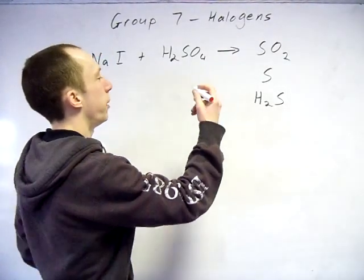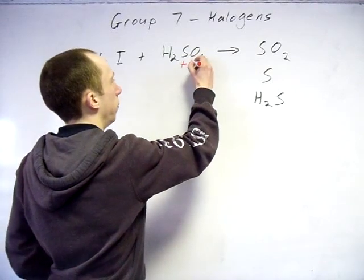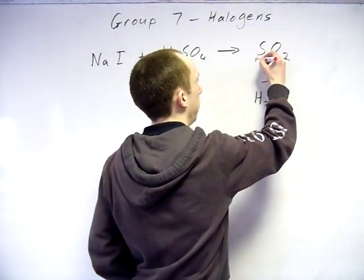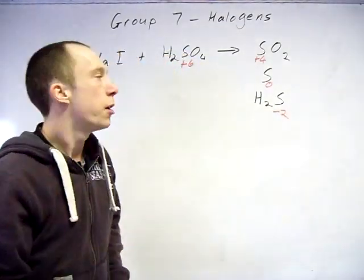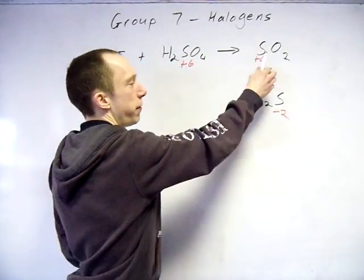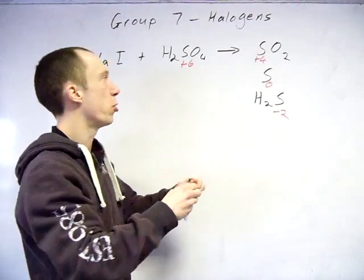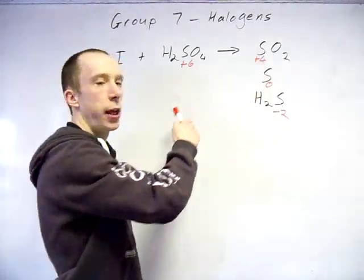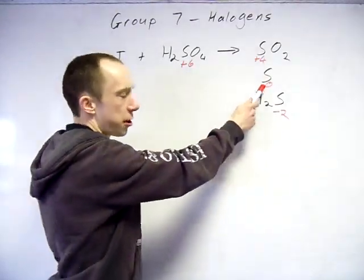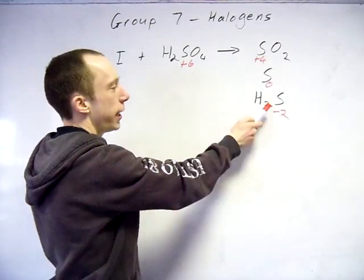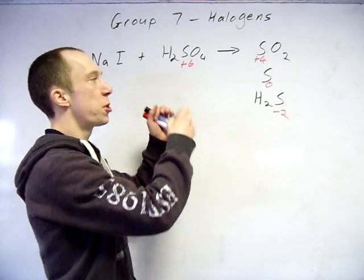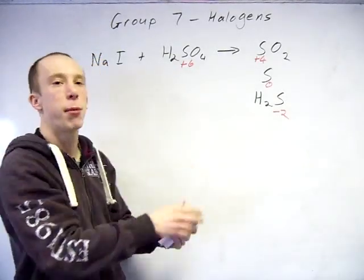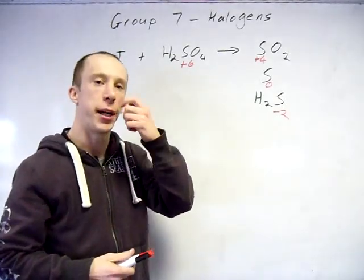Okay, so the oxidation numbers - as you can see it's being progressively reduced all the way down, so effectively gaining 2 electrons here, gaining 6 electrons to go to there, gaining 8 electrons to turn to the hydrogen sulfide. So it's constantly being forced to take more and more electrons by the iodine.